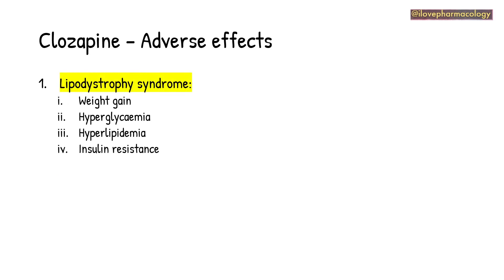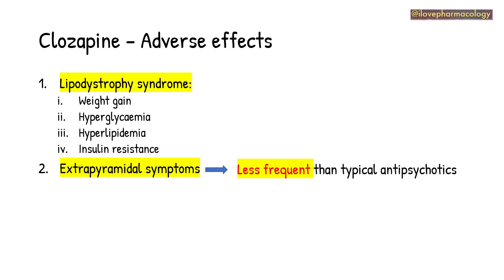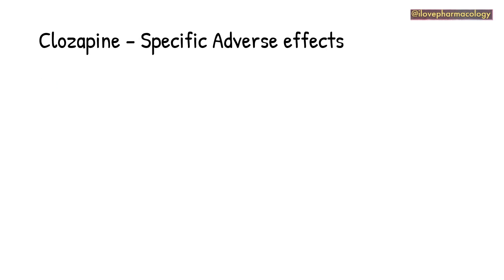The common adverse effects of clozapine include metabolic side effects, also called lipodystrophy syndrome, characterized by weight gain, hyperglycemia which can precipitate diabetes mellitus, hyperlipidemia, and insulin resistance. Extrapyramidal side effects are less frequent with atypical antipsychotics compared to typical antipsychotics. It can also lead to seizures when given at higher doses, and sedation due to H1 receptor blocking.